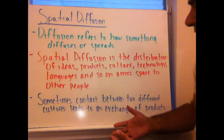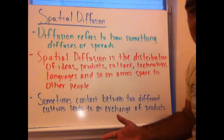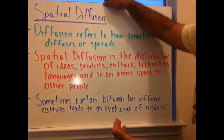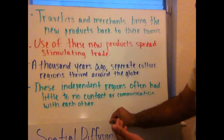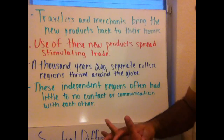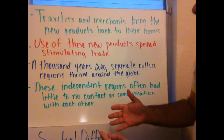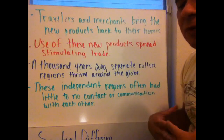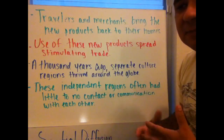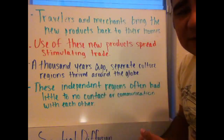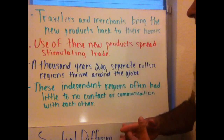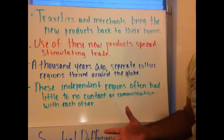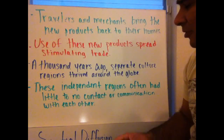Sometimes contact between two different cultures leads to an exchange of products and an exchange of ideas. Travelers and merchants bring new products back to their homes. Use of these new products spreads, stimulating trade. It might stimulate somebody who wants to develop something that they learned or saw from another place. A thousand years ago, separate cultural regions thrived around the globe with little to no contact with other regions of the world.